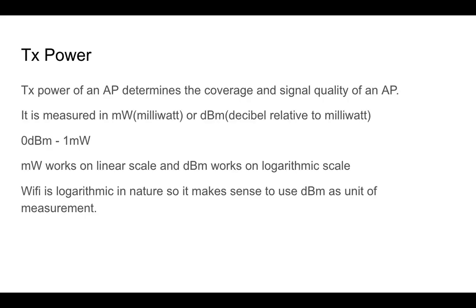Now we're going to talk about TX power. The TX power of an access point determines its coverage and signal quality. It can be measured in milliwatts or dBm — dBm means decibel relative to milliwatt. 0 dBm equals 1 milliwatt. Milliwatt is a linear scale while dBm is a logarithmic scale. Since Wi-Fi is a logarithmic phenomenon, it makes sense to use dBm, and in most cases people measure TX power in dBm.